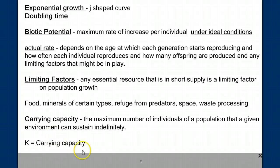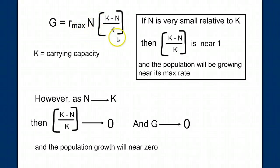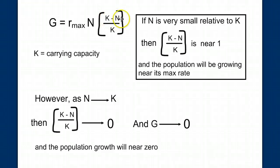We designated carrying capacity as K, and we reformulated our equation to say that the growth of a population is the r-max — the intrinsic rate of growth — multiplied by the population size, but then adjusted by this factor of carrying capacity. The fraction K minus N shows us the difference between the potential of the environment and where we are towards reaching that, divided by the whole.